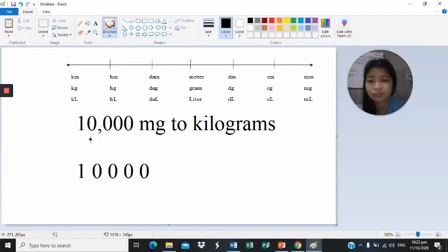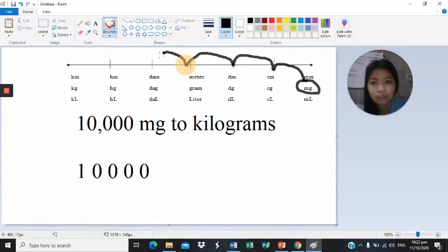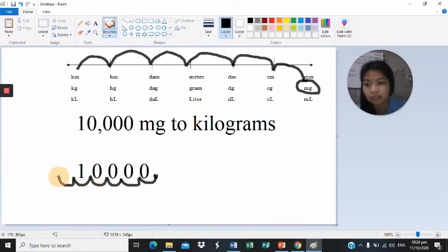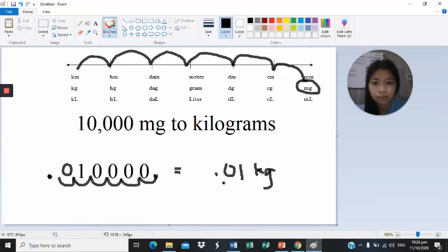For the next example, let us convert 10,000 milligrams to kilograms. In the sequence, milligram is positioned here. How many decimal places are we going to move in order to reach kilograms? One, two, three, four, five, and six. We're going to move six decimal places. For 10,000 milligrams, let's imagine that the decimal place is here. We're going to move six decimal places: one, two, three, four, five, and six. The decimal place will be placed in front, and then you're going to add zero. The answer will be 0.01 kilogram. So 10,000 milligrams is equal to 0.01 kilogram.